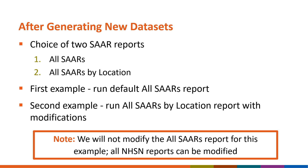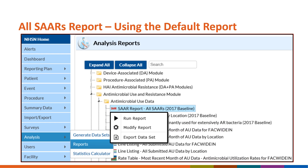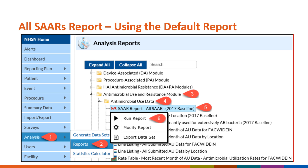Please note, while we will not modify the All SARs report for this example, all NHSN reports can be modified. To run the default All SARs report, navigate to Analysis on the left-hand navigation bar and select Reports. Select the Antimicrobial Use and Resistance Module drop-down option and navigate to the Antimicrobial Use Data folder to access 2017 Baseline SAR reports. Notice that next to the available SAR reports, the Baseline Year 2017 is listed in the title. Select SAR report All SARs 2017 Baseline. Three options are available: Run Report, Modify Report, and Export Dataset. For now, click Run Report to generate the default report. Please note, the report will appear in a separate pop-up window.